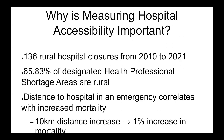Why is measuring hospital accessibility important? Rural Americans face some unique challenges with hospital accessibility. According to the American Hospital Association, there were 136 rural hospital closures between 2010 and 2021. Another study showed that 66% of designated health professional shortage areas were rural. And a 2007 study showed that during an emergency, a 10-kilometer increase in distance to a hospital resulted in a 1% increase in mortality.